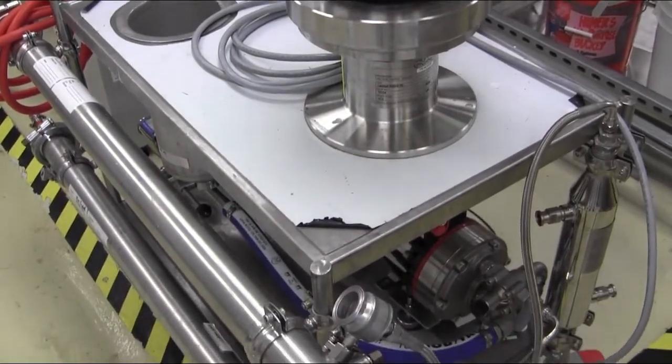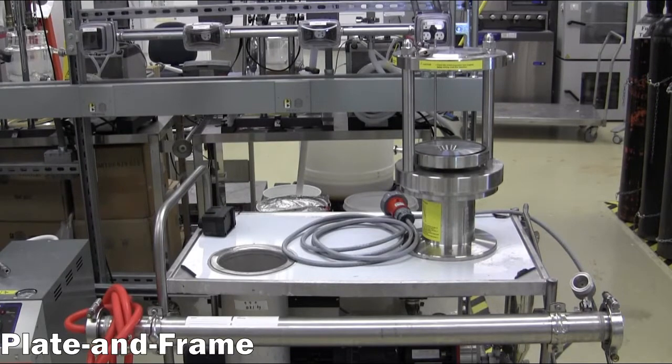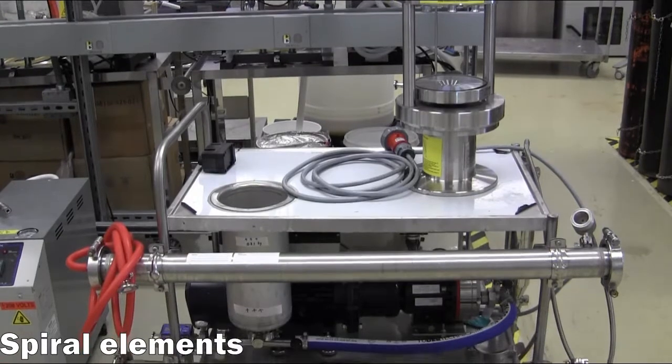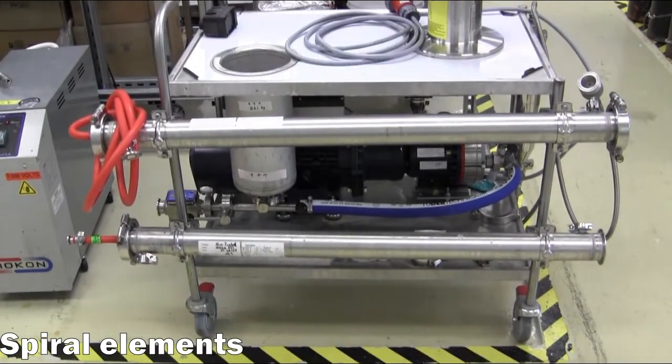The M20 consists of two functional units: a plate and frame style press that can be used to evaluate various flat sheet membranes simultaneously, and a pair of larger cylindrical housings that are used to evaluate spiral wound membranes at a considerably higher throughput.